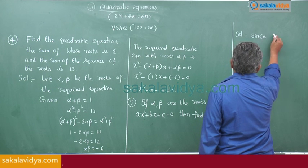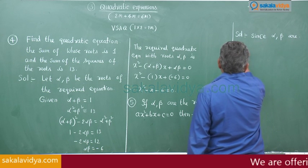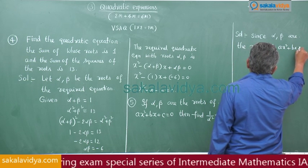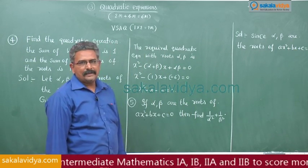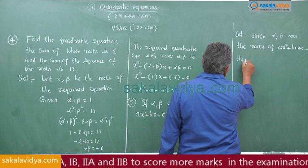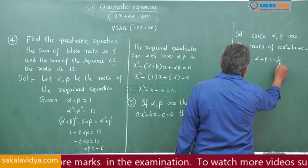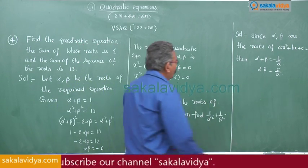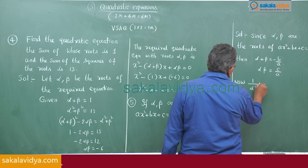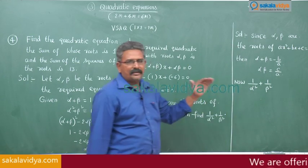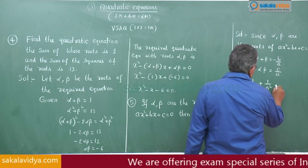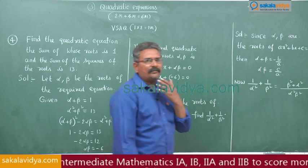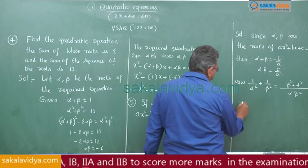Since alpha and beta are the roots of Ax squared plus Bx plus C equals 0, we know that alpha plus beta equals minus B by A, and alpha beta equals C by A. Now, for 1 by alpha square plus 1 by beta square, the LCM is alpha square beta square, giving beta square plus alpha square over alpha square beta square. This is in the form of the algebraic identity A square plus B square, which we can write in terms of alpha plus beta and alpha beta.